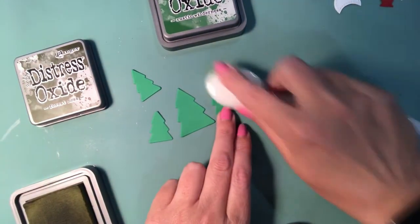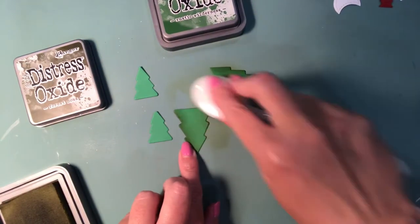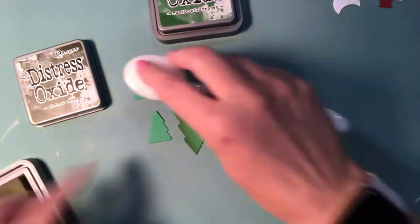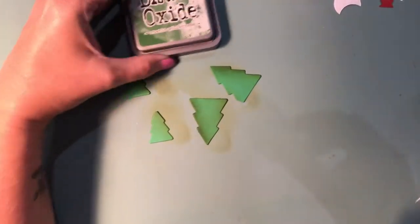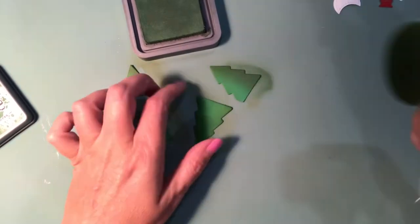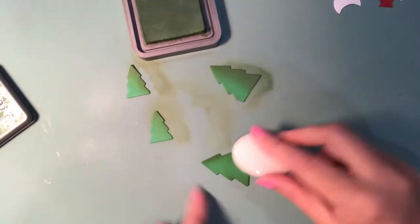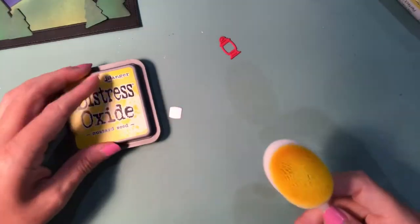Back to the card. Now we're taking those same two colors of distress oxide and going over the trees. There are single trees in this so that you can add trees, but I wanted the backdrop frame to be black and then the trees to have color to them. I cut them out of green cardstock and now I'm just adding a little bit of distress oxide on the sides to give them a little bit of depth and dimension.